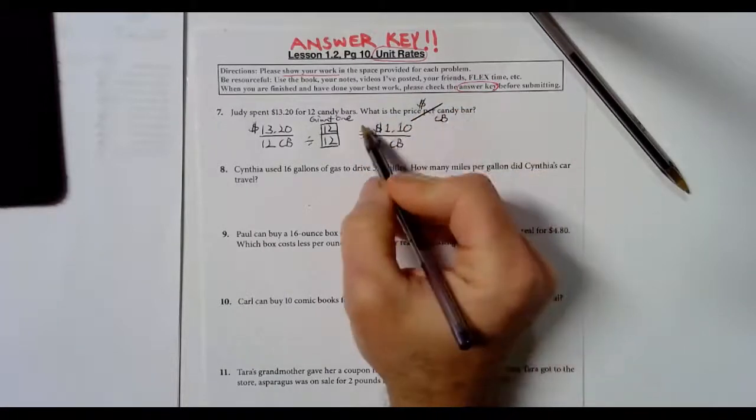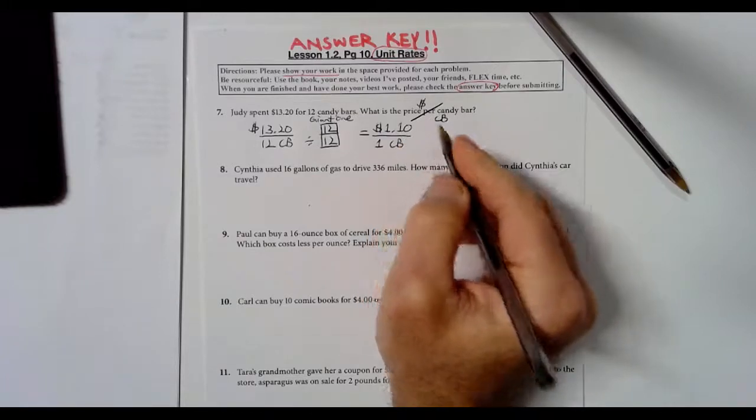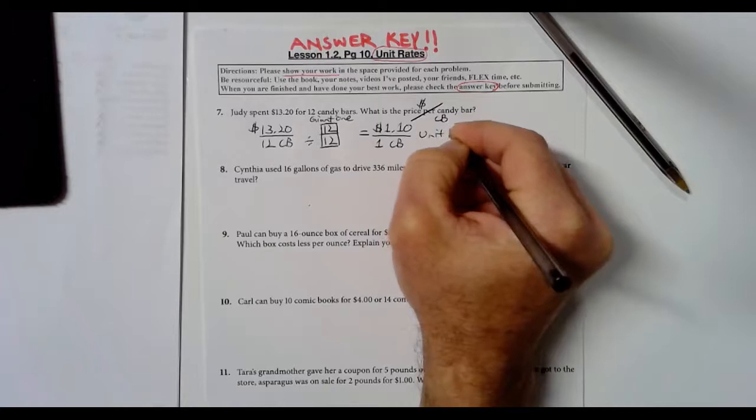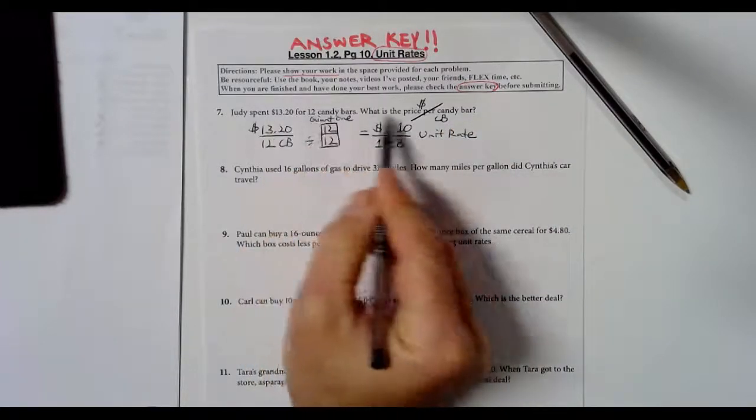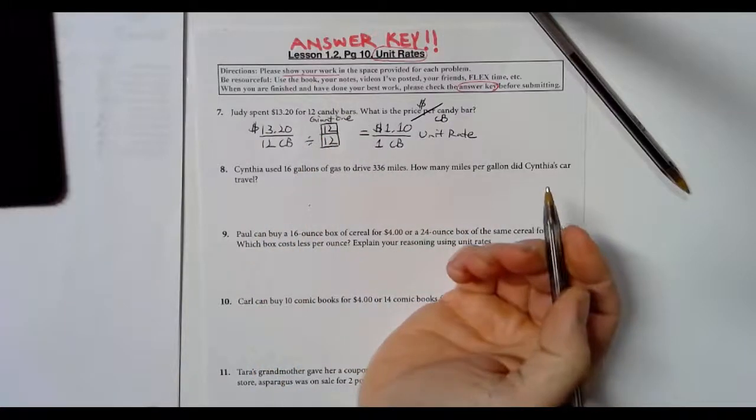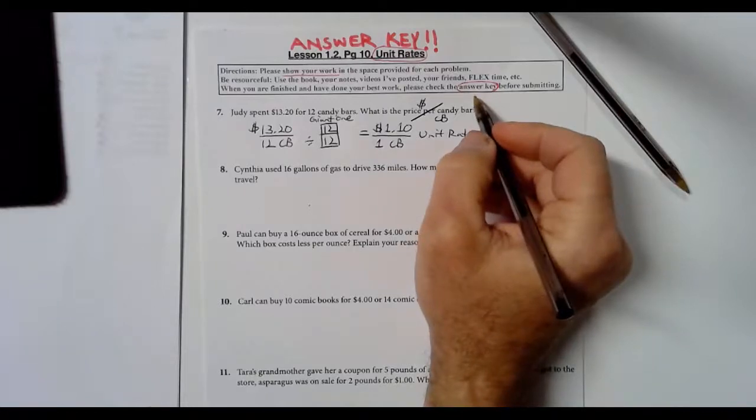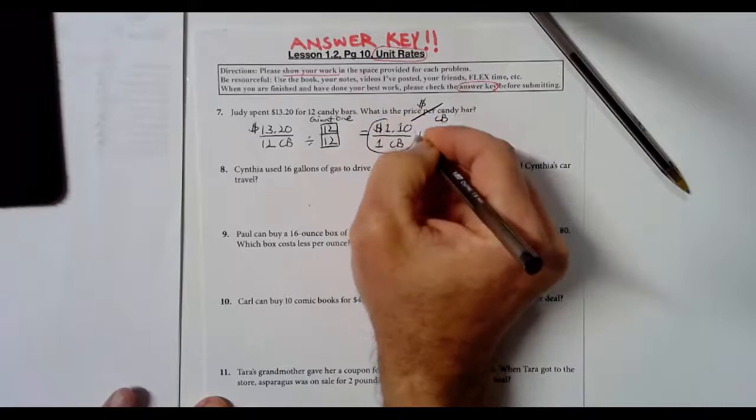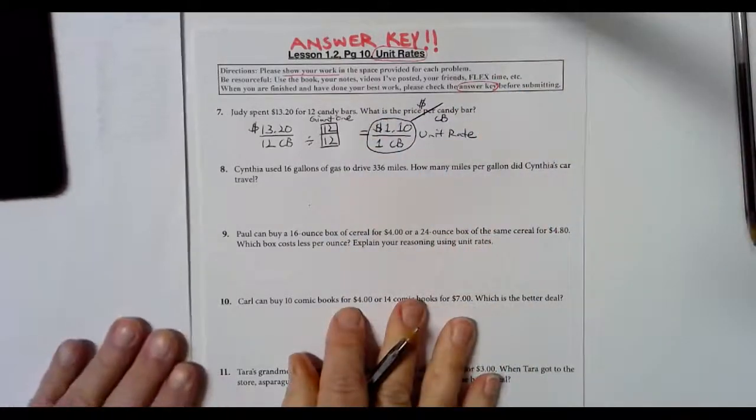12 divided by 12 is 1, and $13.20 divided by 12 is $1.10. So did we answer the question, price per candy bar? Yes, we labeled it, it's a unit rate, we showed our work in the space provided, and we're making the answer key. I'm going to circle that just to be so Captain Obvious for this teacher.